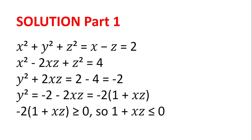Solution: We have x squared plus y squared plus z squared is equal to x minus z equals 2. We can take the x minus z equal to 2 and square both sides to get x squared minus 2xz plus z squared is equal to 4.